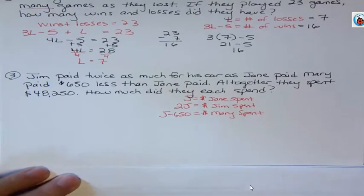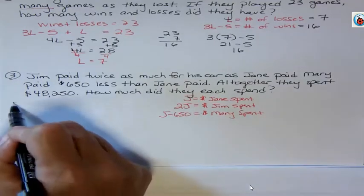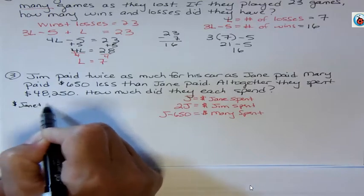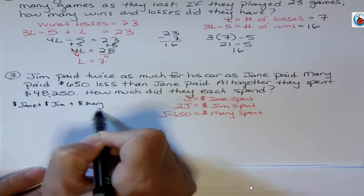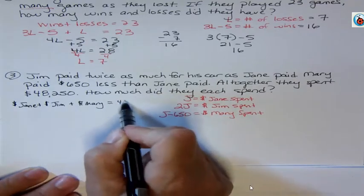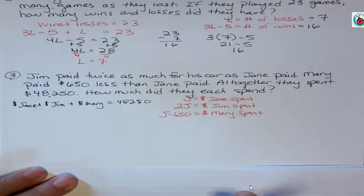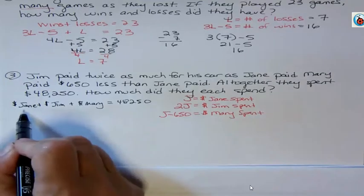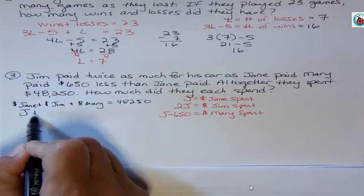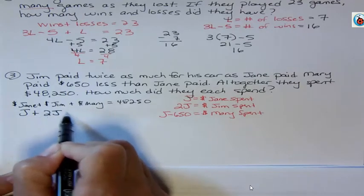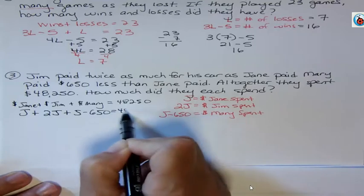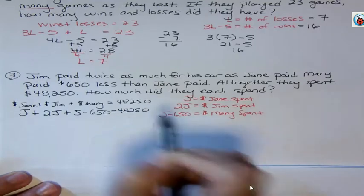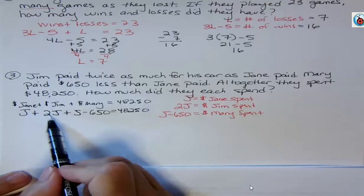Now here's what we have to all agree on: that the dollars spent by Jane plus the dollars spent by Jim plus the dollars spent by Mary all add up to $48,250. That's what we're doing here. So we're going to add our three expressions. Jane spent J, Jim spent 2J, and Mary spent J minus 650. Does everybody agree to that? So what I have is 1, 2, 3, 4Js.